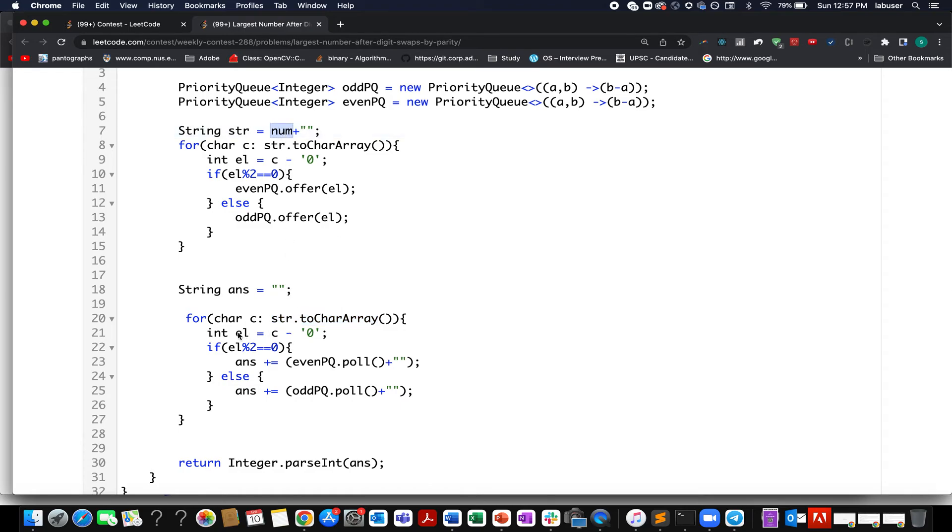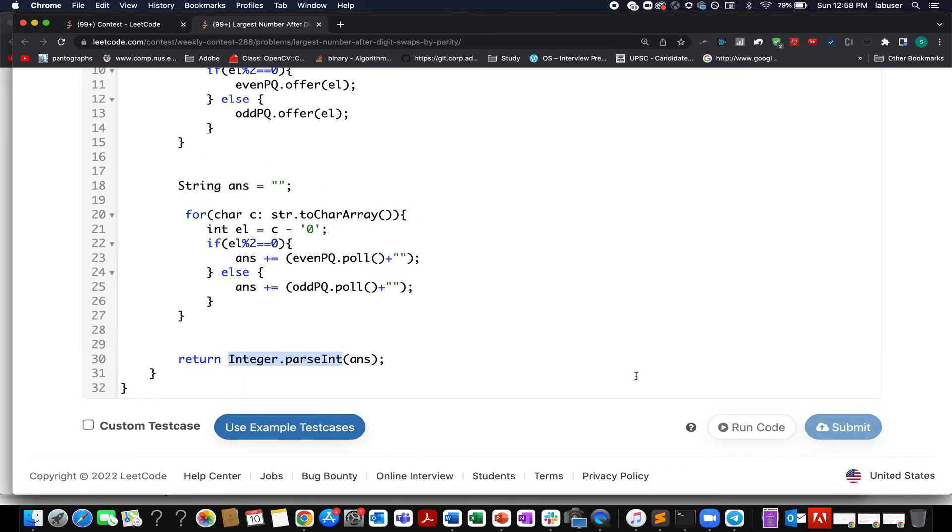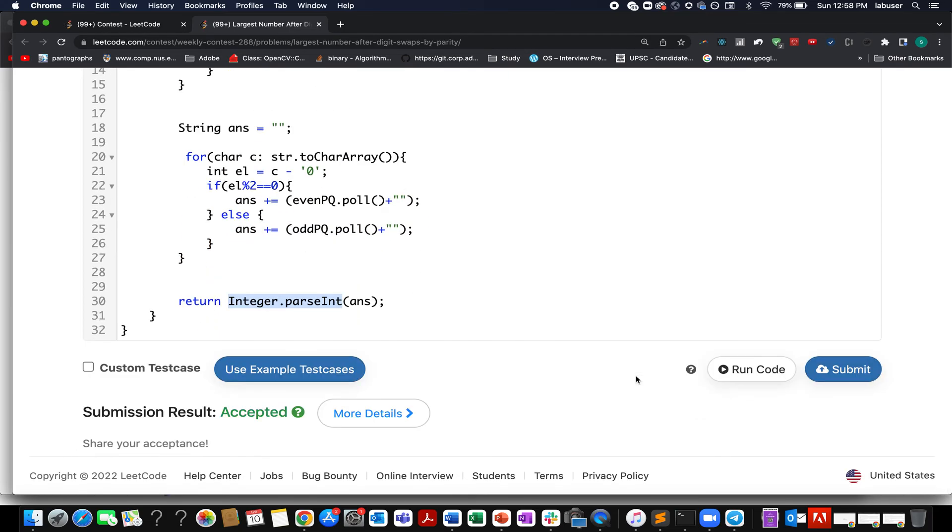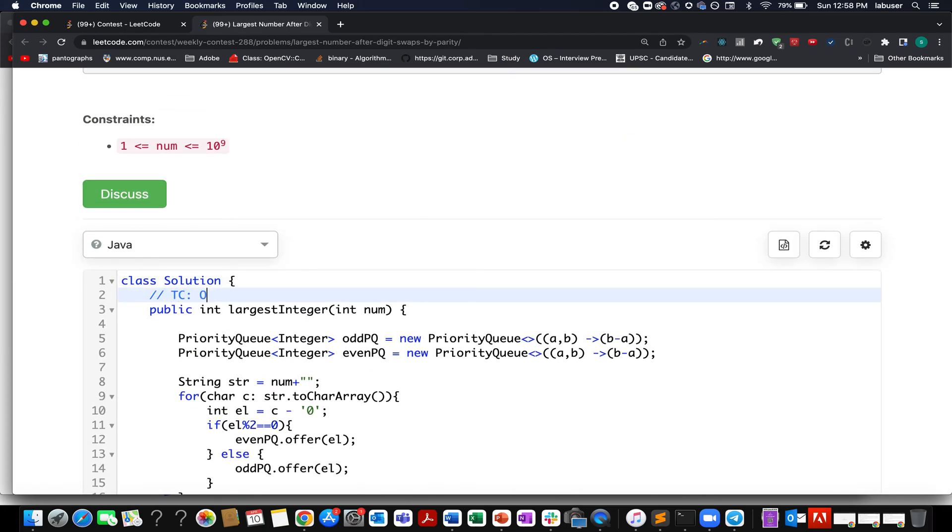I again check whether the current element happens to be even in nature or odd in nature. If it is even, then I'll pull out element from the even priority queue. Otherwise, I'll pull out element from the odd priority queue and append it to my answer string. Once I'm done with this, I simply cast my final answer into integer format and return the result. Let's try this up. Here, accepted! Awesome.